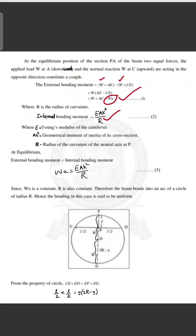We denote E as Young's modulus and Ak² as the geometrical moment of inertia. The external bending moment equals the internal bending moment: W·a = EAk²/R. So R is a constant — therefore the beam bends into an arc of a circle of radius R. Hence the bending in this case is said to be uniform.